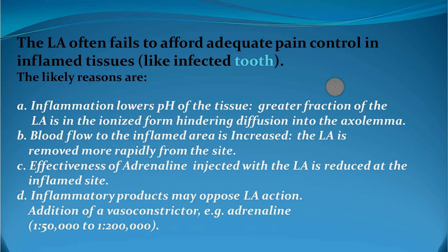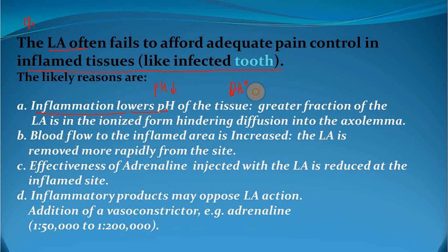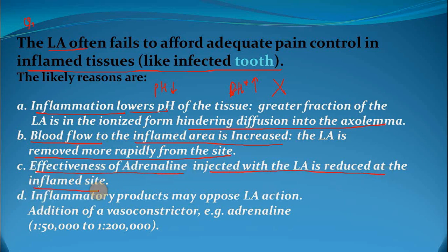A question comes to mind: if local anesthesia relieves pain, then why is pain not controlled in inflamed tissues like infected teeth? There are reasons why local anesthesia fails: inflammation causes the pH of that tissue to decrease, and because of that lower pH, a greater fraction of the local anesthetic will be in the ionized form, which is not capable of crossing or diffusing into the axolemma. If blood flow to the infected area is increased, local anesthesia will be removed rapidly from that site. The effectiveness of adrenalin injected with local anesthesia is reduced at inflamed tissue, and inflammatory products may oppose the local anesthesia action.